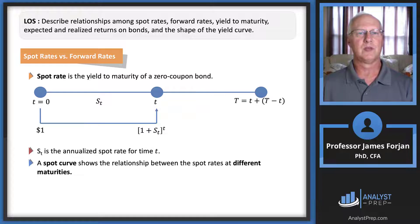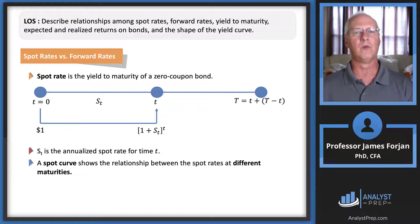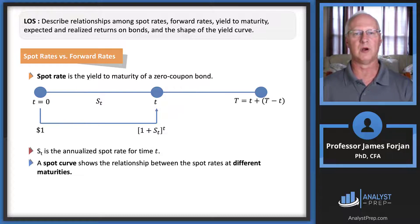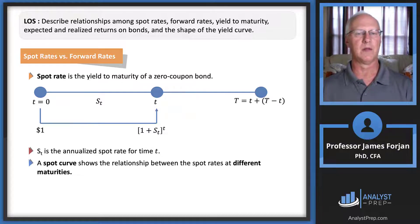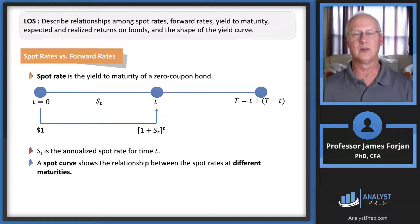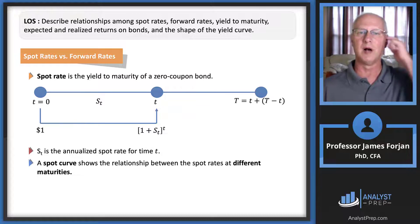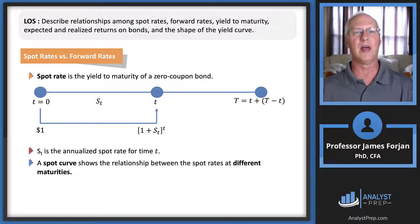Let's begin with the first LOS: spot rates. You probably remember this from Level One — it's the yield to maturity of a zero coupon bond. If we have a dollar at time period zero and want to know what it's worth at time period t, we multiply that dollar times (1 + spot rate) raised to the power t. A spot curve shows the relationship between spot rates at different maturities — one-year, two-year, twelve-year, and so on.